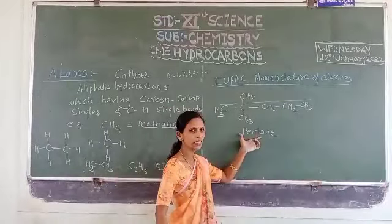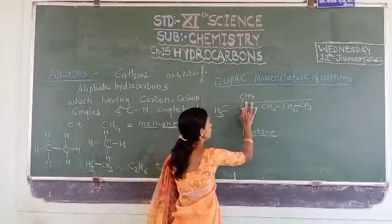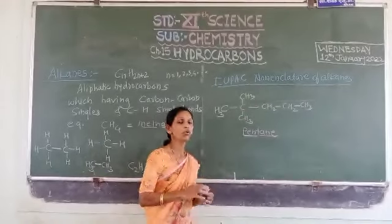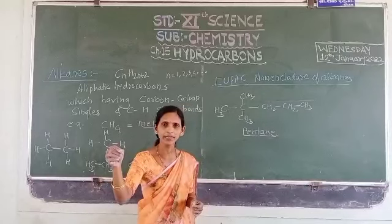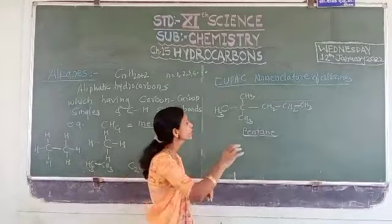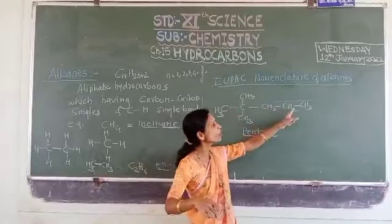Therefore we have to consider this longest chain as the parent chain containing five carbon atoms. The parent alkane is pentane — pent means five carbon atoms, that is the root name, and -ane is the suffix. The remaining branches are the substituents or side chains which we have to include in the nomenclature. We have to number only the carbon atoms present in the longest chain.